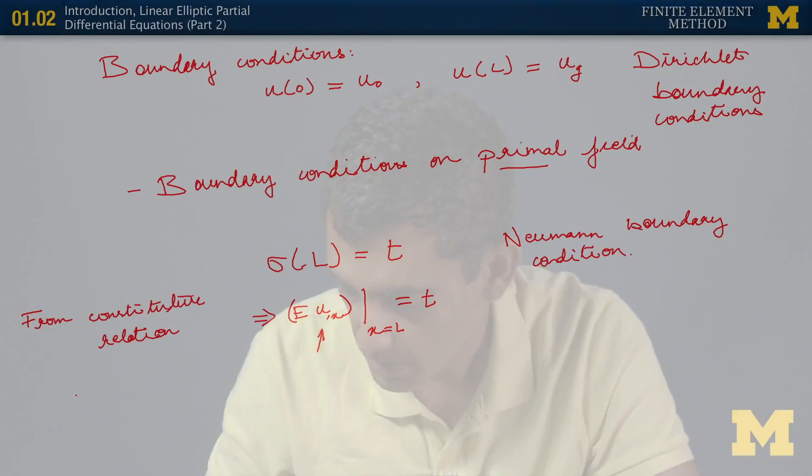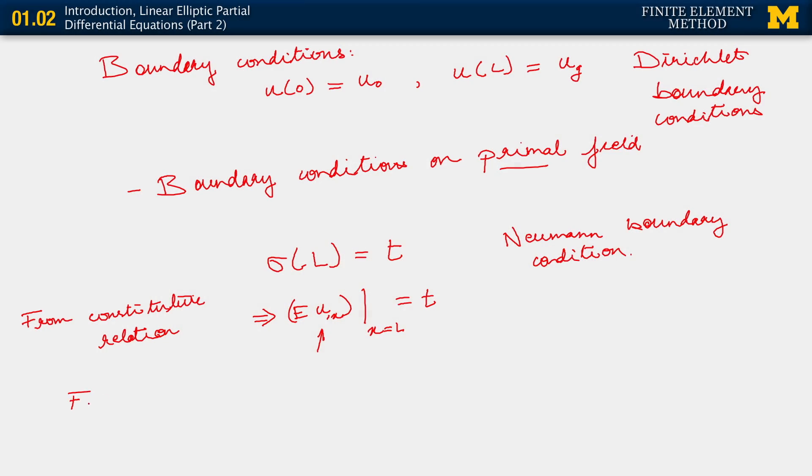That's not uniformly true. For certain higher order problems, the situation gets a little more complex, which we won't get into in this series of lectures. Alternatively, in the context of the displacement problem, the Dirichlet boundary condition is often also called the displacement boundary condition, for obvious reasons. Whereas the Neumann boundary condition often gets called the traction boundary condition.